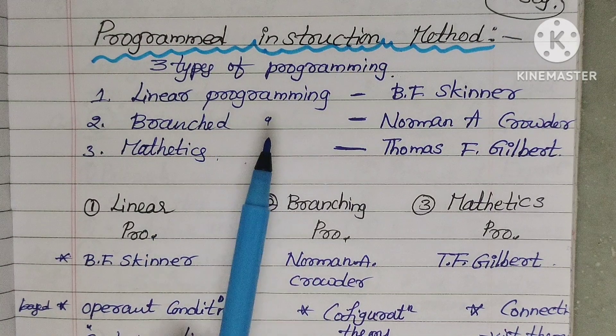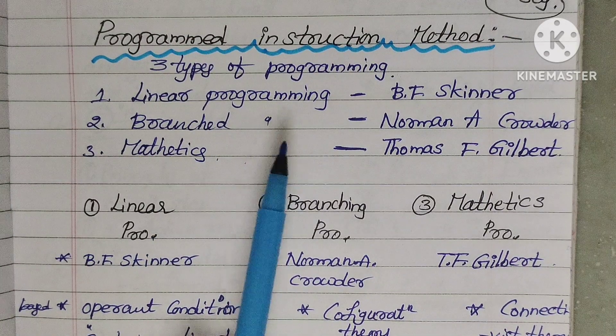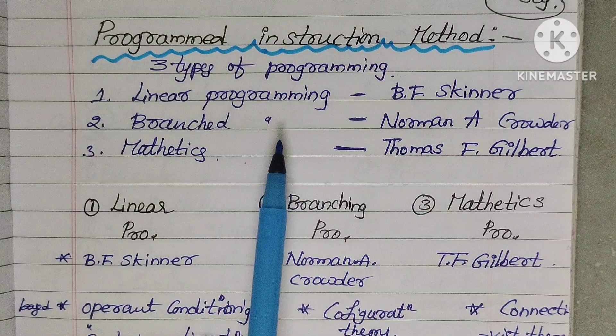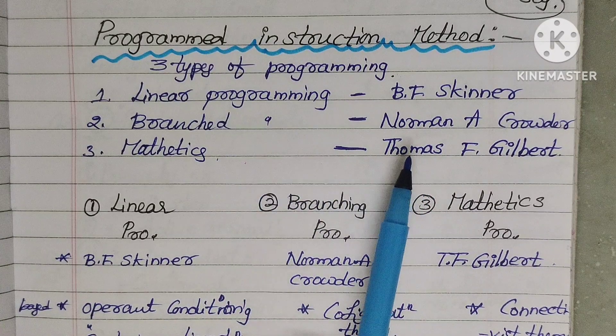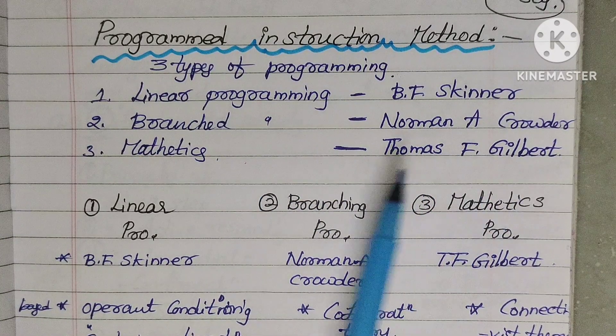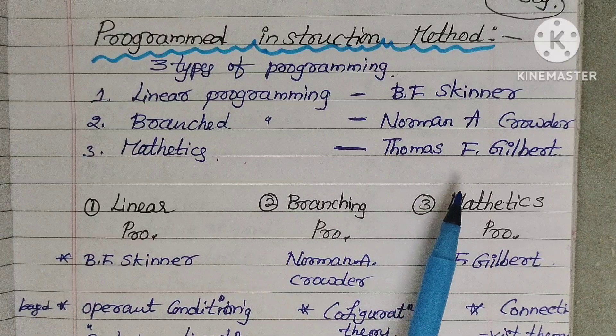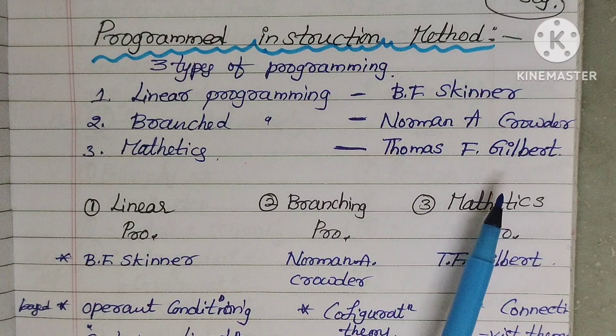Linear programming is given by B.F. Skinner. Branched programming is given by Norman A. Crowder. Mathetics is given by Thomas F. Gilbert.